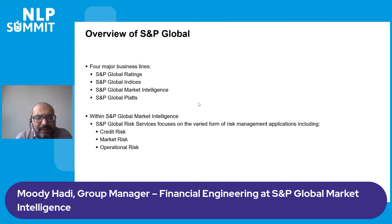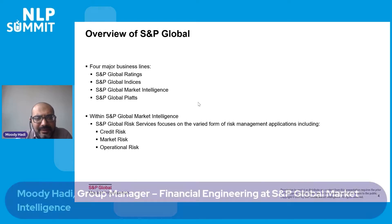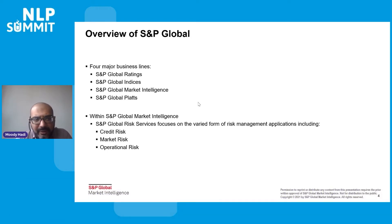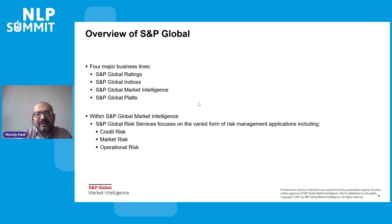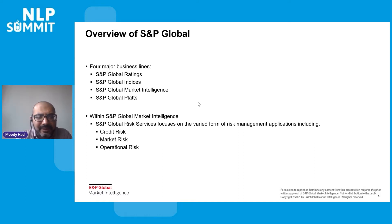S&P Global has four major business lines: the ratings agency which rates large companies for uppercase ratings for probable default; the S&P 500 and Dow Jones indices business; S&P Global Market Intelligence, which is a data analytics platform; and S&P Global Platts, which is an energy-focused area. Today's presentation covers S&P Global Market Intelligence's risk services, focusing on credit risk, capital market risk, and operational risk. This is purely a data analytics side presentation.